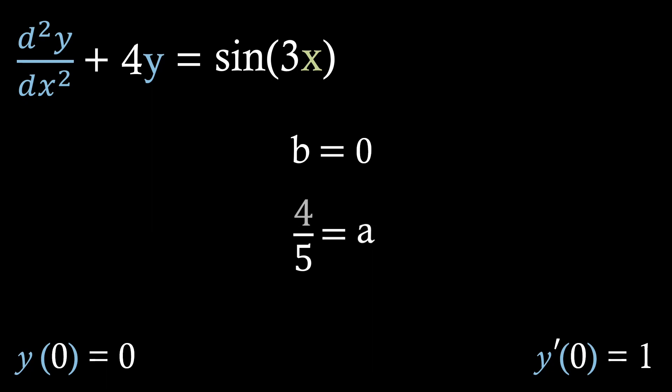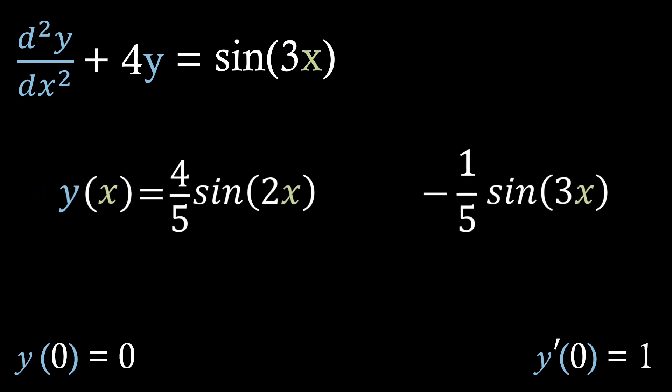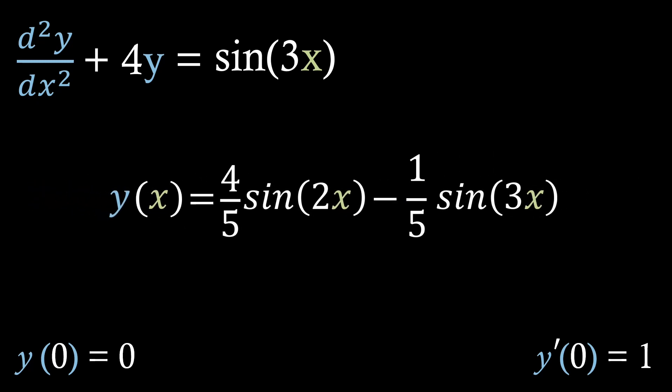Now that we've got both values for a and b, we can go back and input these into our general solution. If we then simplify, we'll actually have our particular solution to our differential equation with those boundary conditions that we can see at the bottom.